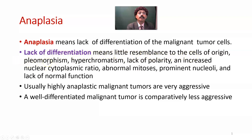Pleomorphism — that means different shape and size. Hyperchromatism — that means excessive amount of chromatin in the nucleus of a cell. Lack of polarity — that means the orientation of the cell to the surrounding cells and supporting cells; the arrangement of the cells will be lost.